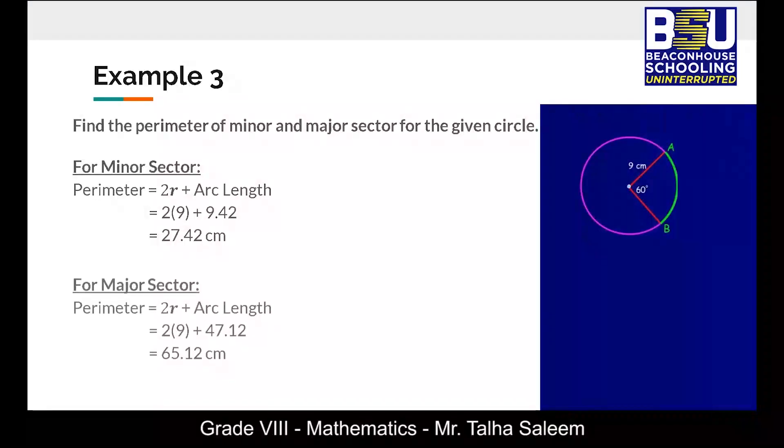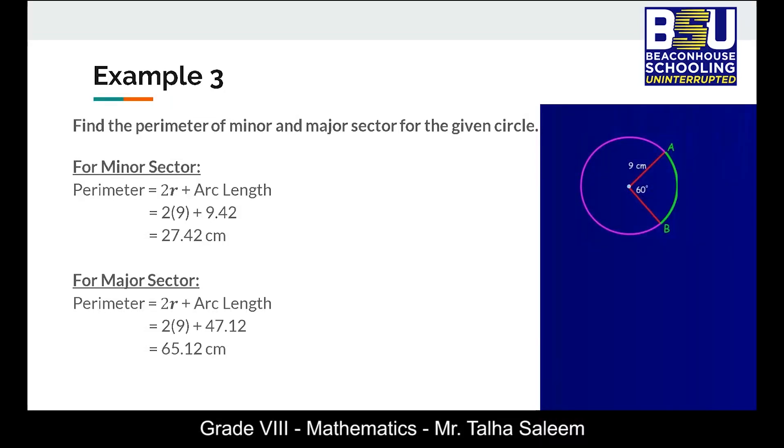Now for the major sector, the formula will remain the same but the value of arc length will be changed that we calculated in the previous slide as 47.12. Adding both the values will give us the answer as 65.12 centimeters.